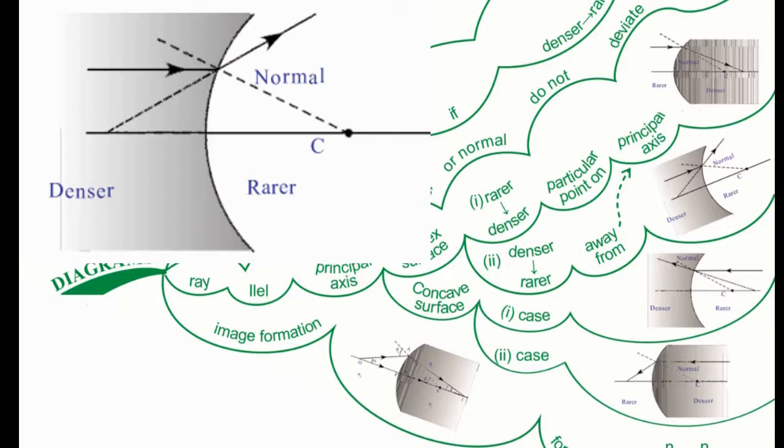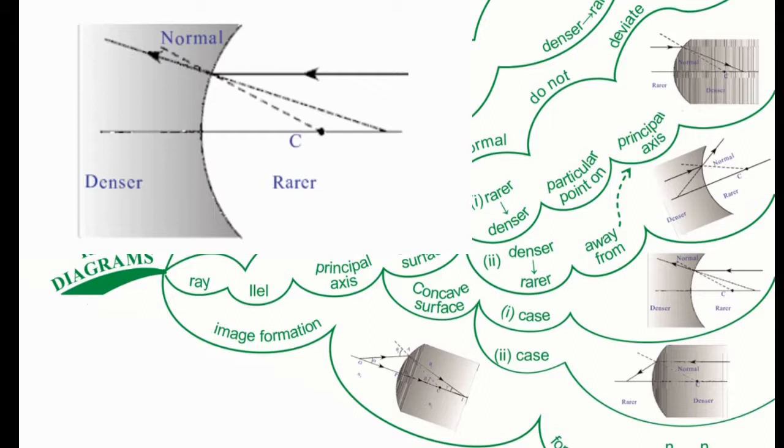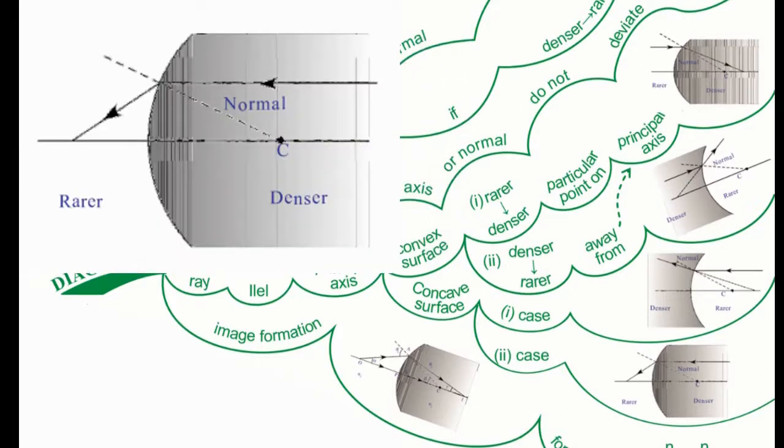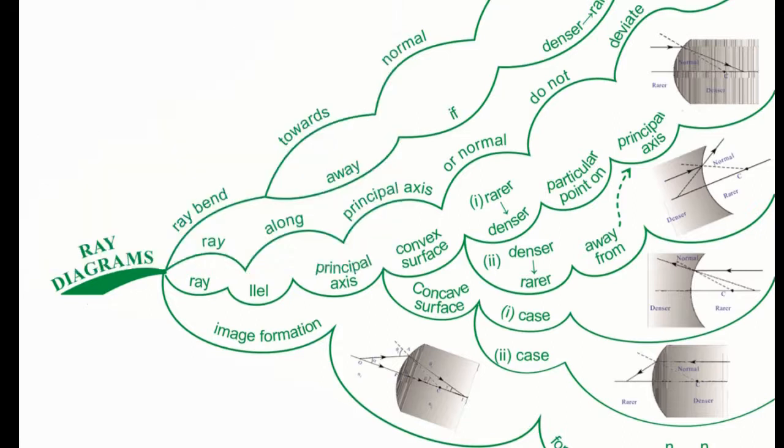For concave surface, in case of rarer to denser, the refracted light will move away from the axis. In case of denser to rarer, it will meet at a particular point. You can see all these observations in the ray diagrams given corresponding to their subbranches.